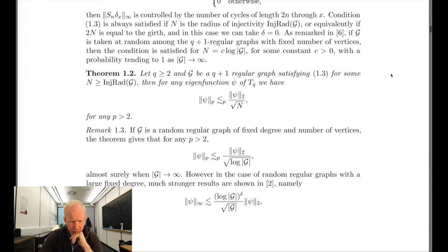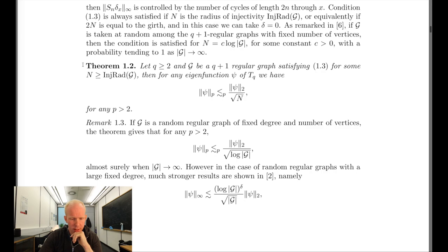This was the main result of their paper, theorem 1.2, which connects the LP norm into the injectivity radius of the graph. The injectivity radius is a quantity that describes the size of the graph in many ways.